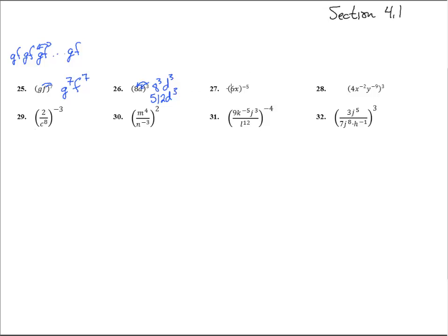Here we have 6x to the negative 5. So we have 6 to the negative 5, x to the negative 5. Negative exponents put everything on the bottom. So it's 1 over 6 to the fifth, x to the fifth.